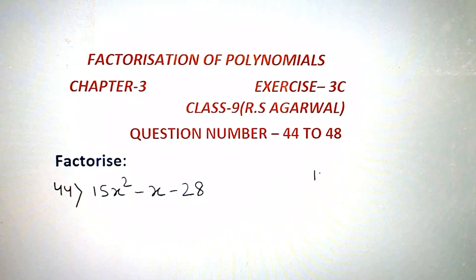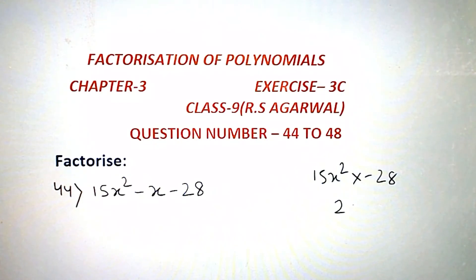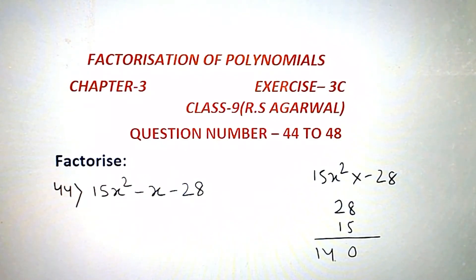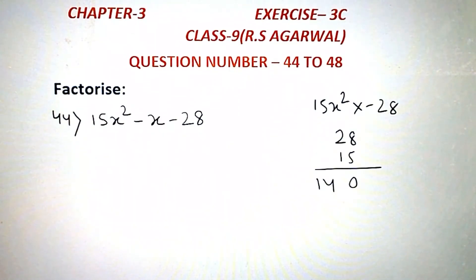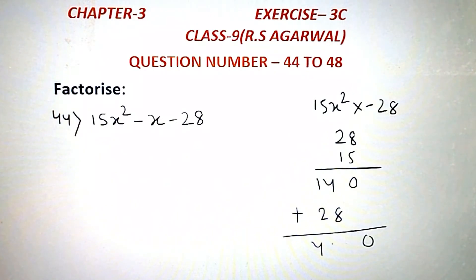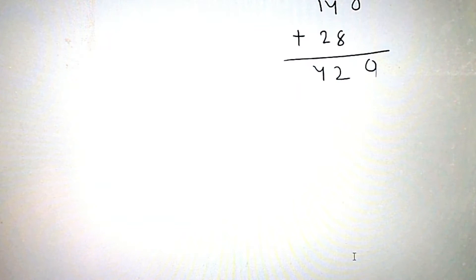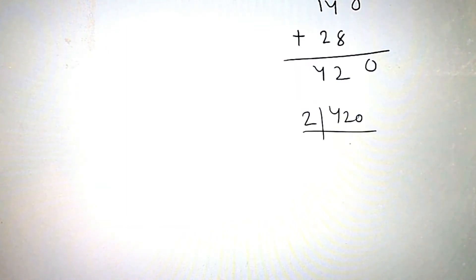First of all we have to multiply 15x square into minus 28. Then we get minus 420. Now we factor 420 and divide it.